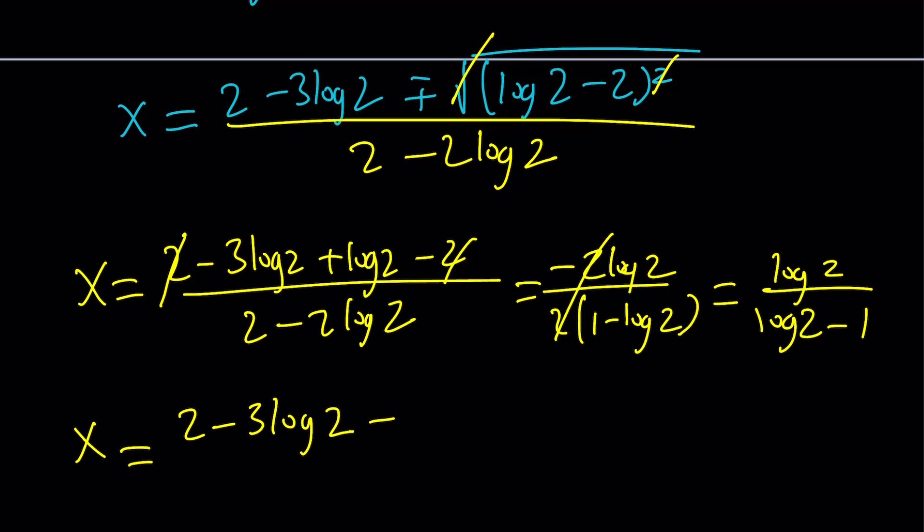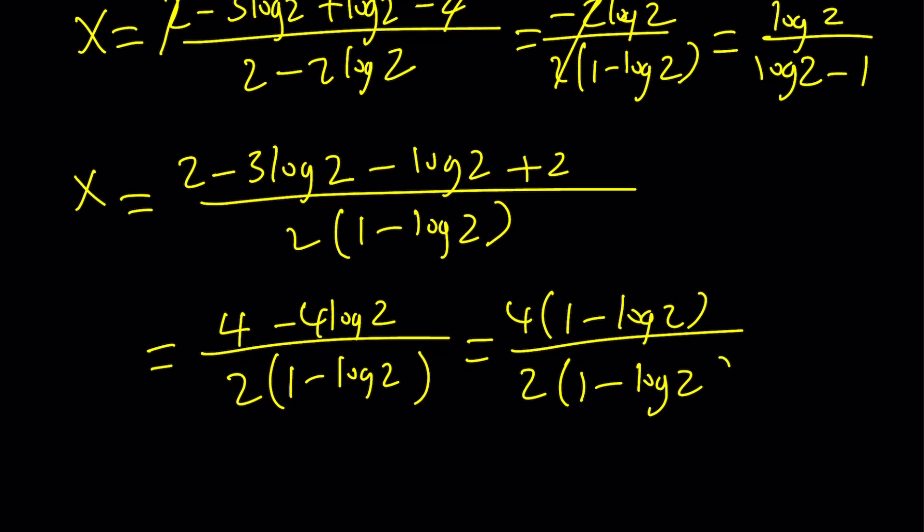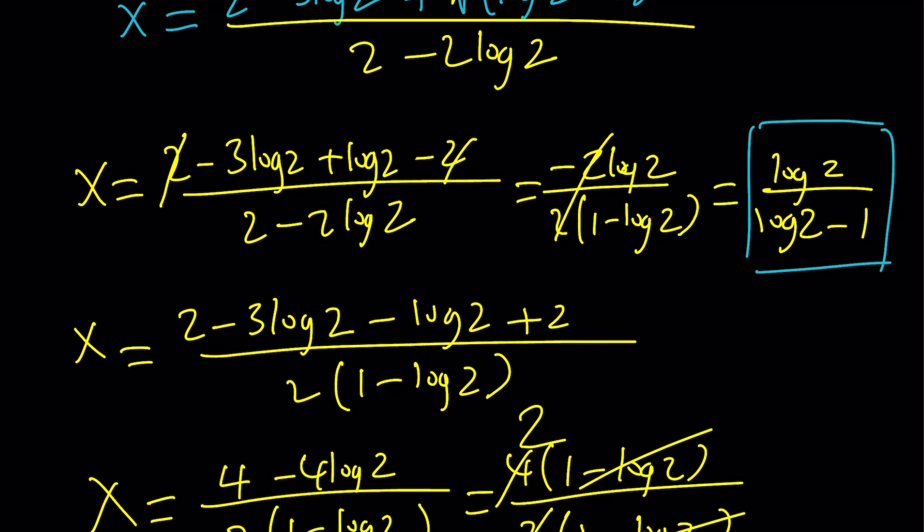2 minus 3 log 2 minus log 2 plus 2 divided by 2 times 1 minus log 2. Let's simplify this. 2 plus 2 is 4 minus 4 log 2 over 2 times 1 minus log 2. You can factor out a 4, giving you 1 minus log 2 divided by 2 times 1 minus log 2. 1 minus log 2 cancels out, 2 goes into 4 twice. And yes, x equals 2 is the other solution. So one of the solutions is an integer, which makes this problem actually nice.